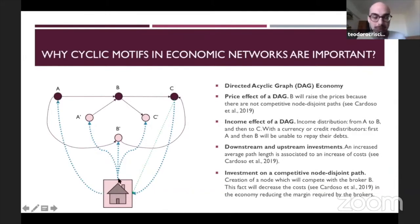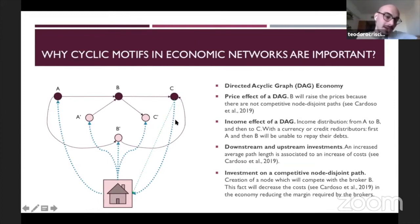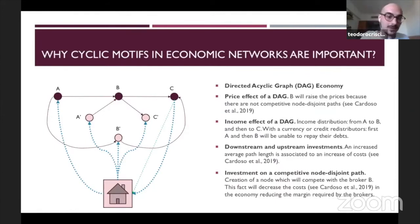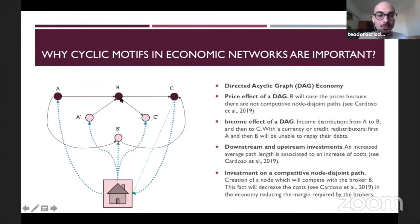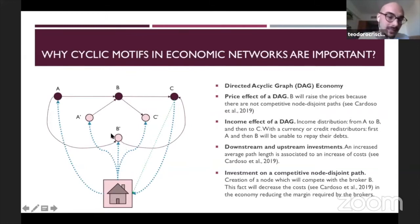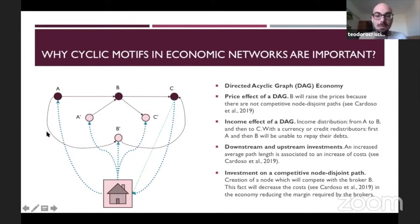Usually you can find a redistributor — which can be a bank or the state — which tries to move the surplus that node C is going to accumulate and reinvest it. Node B is actually the broker of this economy. The redistributor, say a bank, may want to invest in the creation of a new node B-prime in order to create another path. But still in this economy there is no cycle.